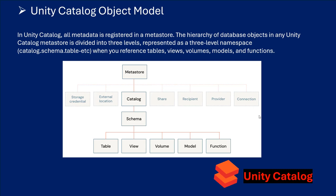Let's talk about the Unity Catalog object model. In Unity Catalog, all metadata is registered in the Metastore. The hierarchy of database objects in any Unity Catalog Metastore is divided into three levels, represented as catalog.schema.table/view and so on. As we can see in this diagram, we have the Metastore, the catalog, the schema, and then we're going to have either table, view, volume, model, or function.